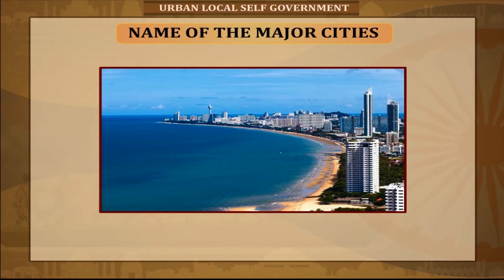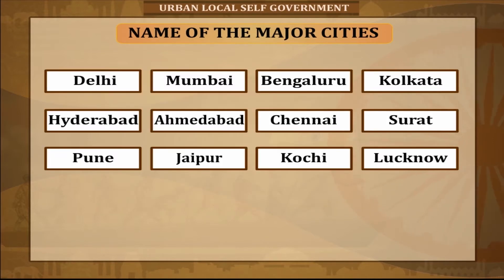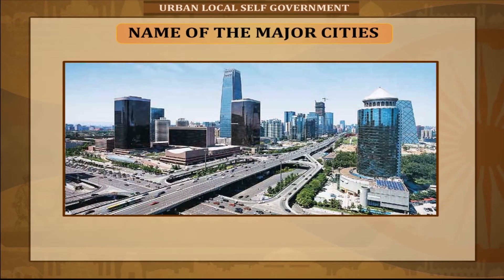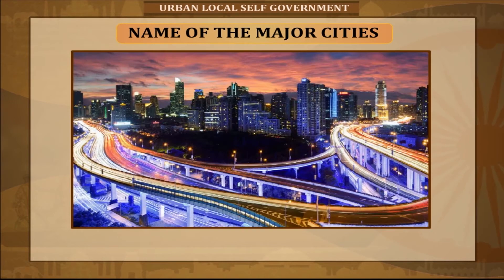There are 47 metropolitan cities in India as of the 2011 census. The top 12 metropolitan cities based on population are Delhi, Mumbai, Bengaluru, Kolkata, Hyderabad, Ahmedabad, Chennai, Surat, Pune, Jaipur, Kochi, and Lucknow. The census commission defines a metropolitan city as having a population of more than 10 lakhs (1 million and above).